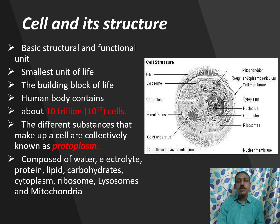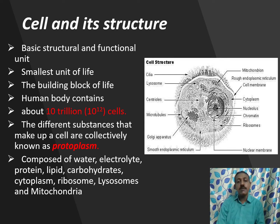Next we shall see about the cell and its structure. Basically, a cell is the structural and functional unit of any organism. It is the smallest unit of life and the building block of life. The human body contains about 10 trillion cells. The different substances that make up a cell are collectively known as protoplasm. The protoplasm is composed of water, electrolytes, proteins, lipids, carbohydrates, cytoplasm, ribosomes, lysosomes and mitochondria.